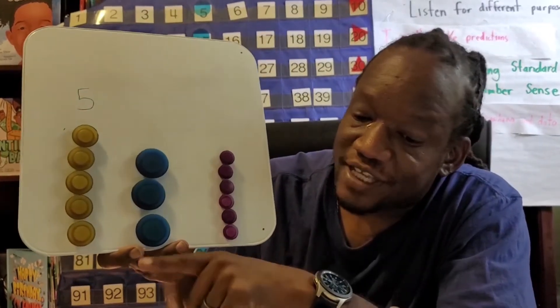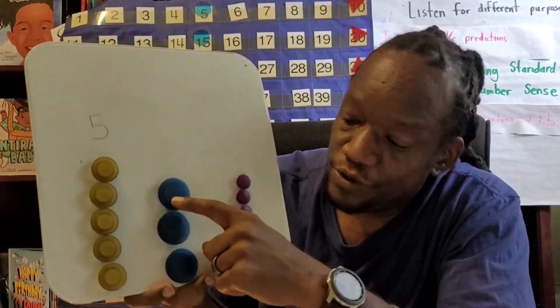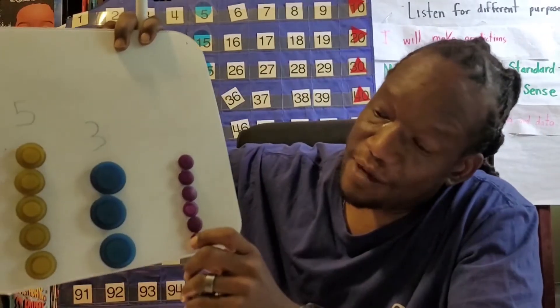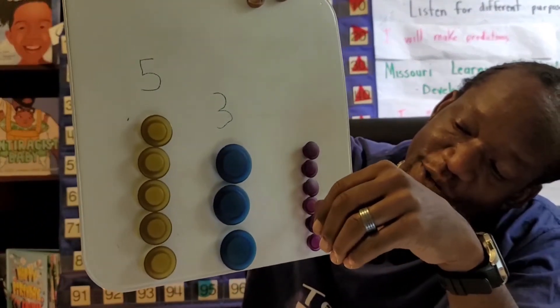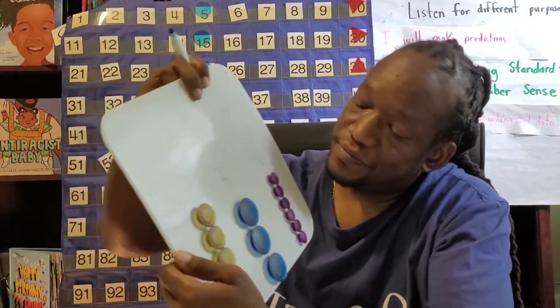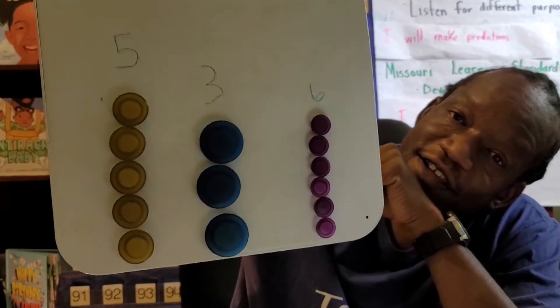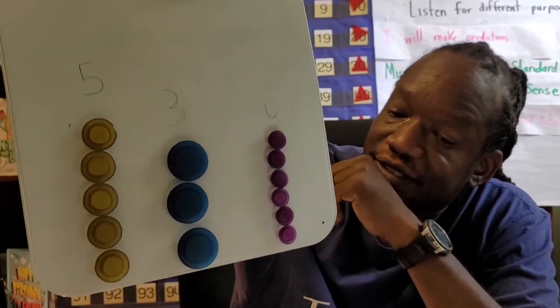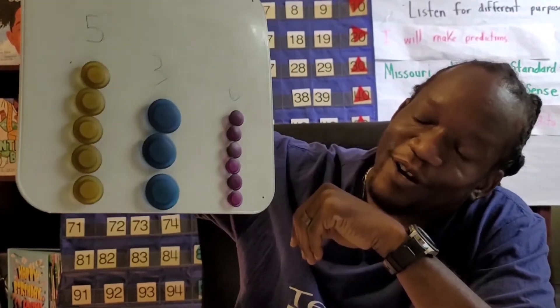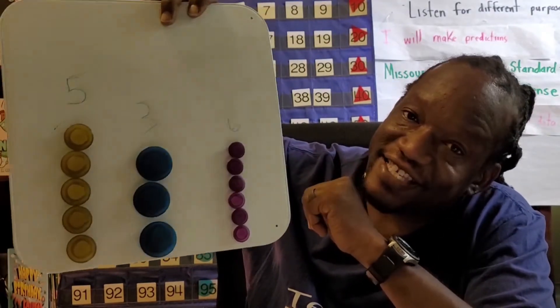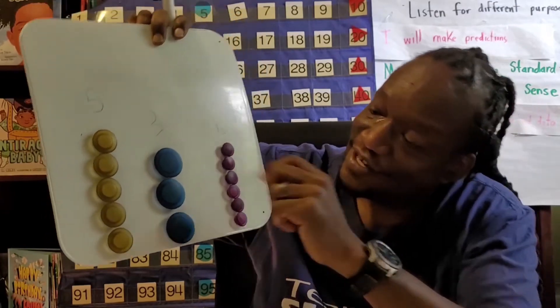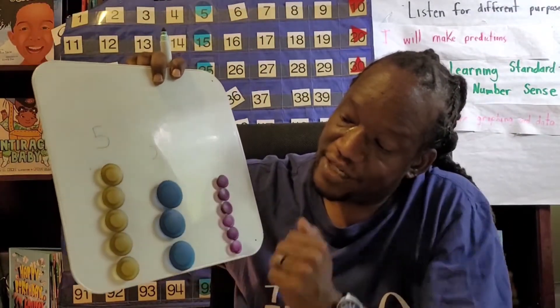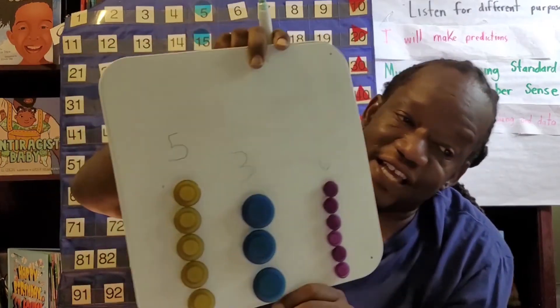Now let's count the number of blues. Let's count it together: one, two, three. We have three blues. And let's count purple: one, two, three, four, five, six purple. So if you look at our graph or our numbers, which one had the most? Purple. Exactly, because purple has six of them. Blue has three and yellow has five.